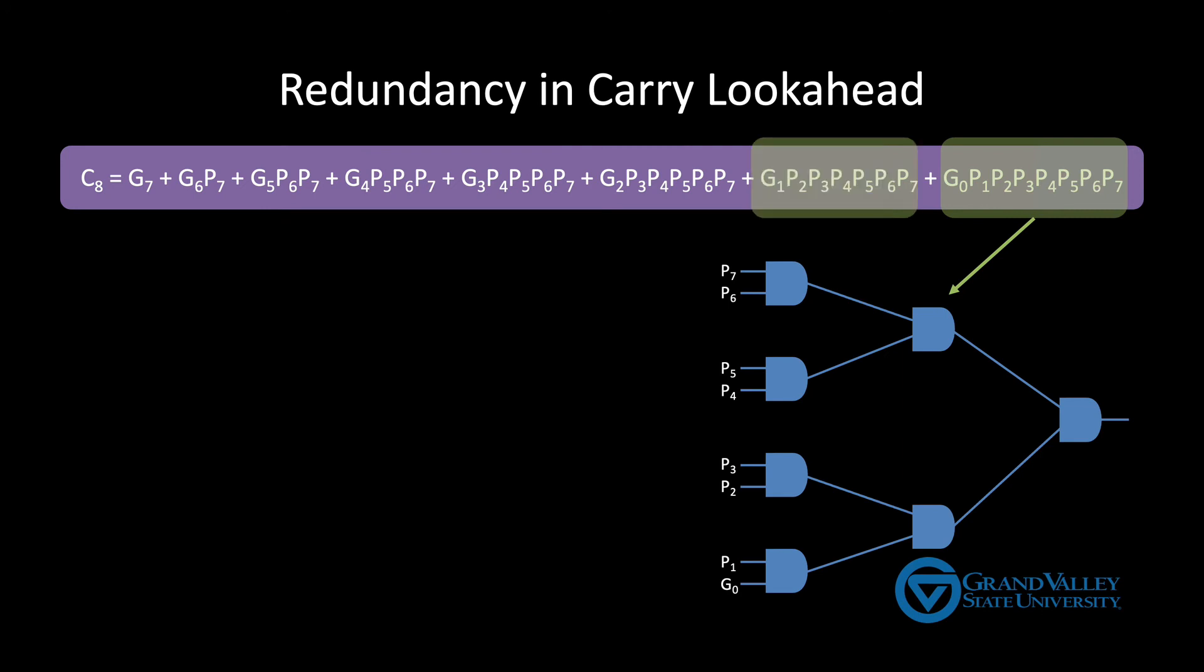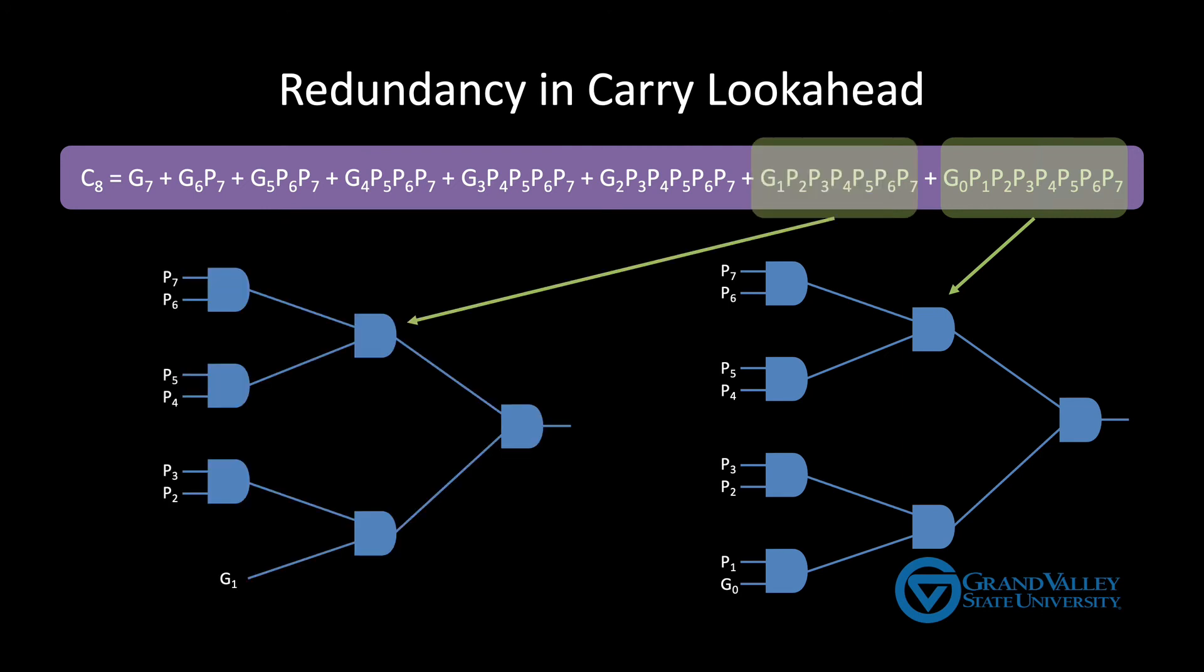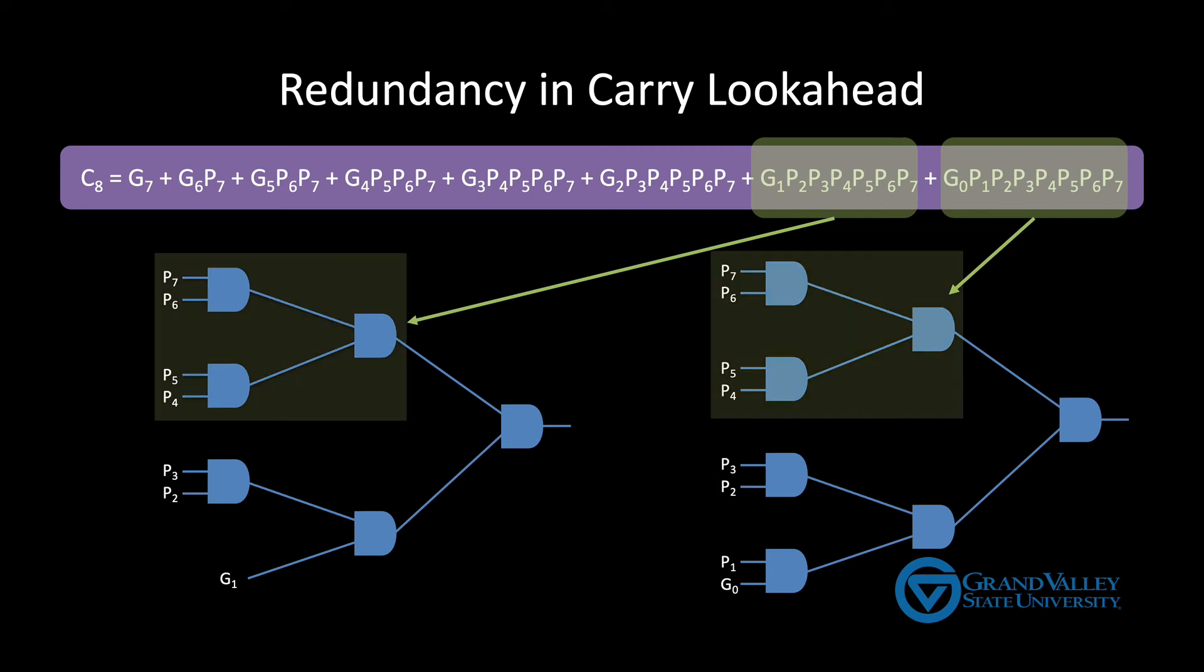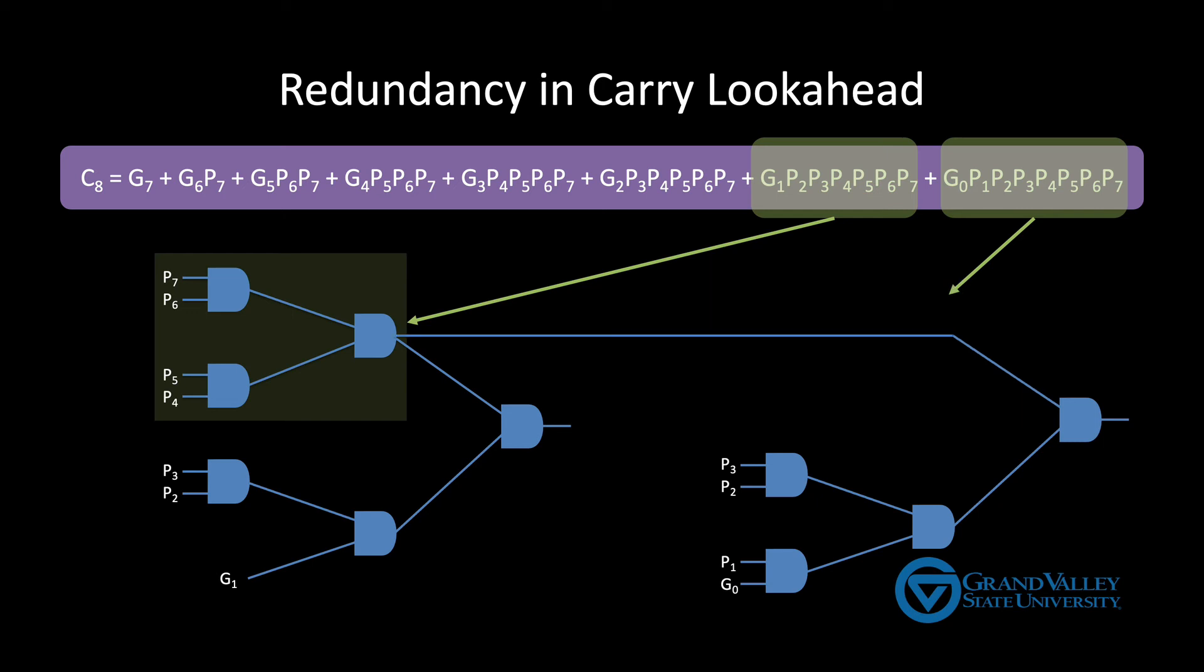Now, notice that both of these trees contain this subtree. The gates in both of these sub-trees are doing the same work, so we don't really need them both. So we can combine them like this. This circuit has the same propagation delay, but uses fewer gates.